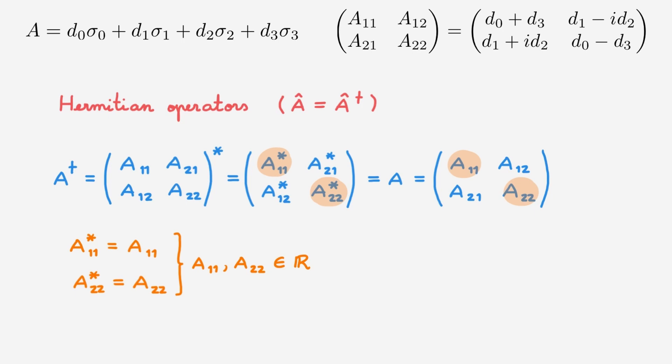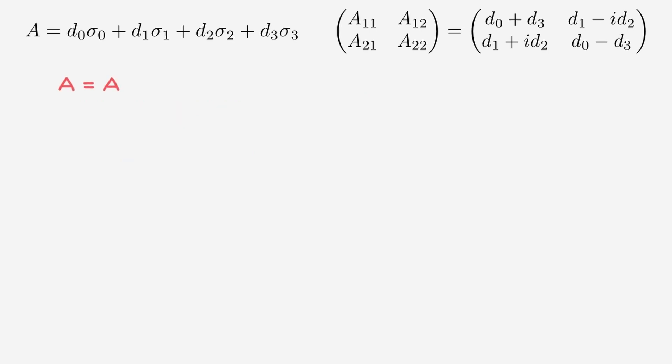Moving on to the off-diagonal terms, comparing the relevant entries implies that A21 and A12 are complex conjugates of each other for a Hermitian matrix. So overall, for a general Hermitian matrix A, the diagonal entries are real and the off-diagonal entries are complex conjugates of each other. Now, what do these results imply for the expansion coefficients d when we want to write the Hermitian matrix A in the basis of the identity plus Pauli matrices?